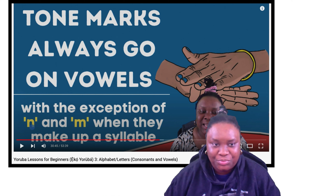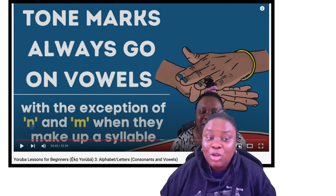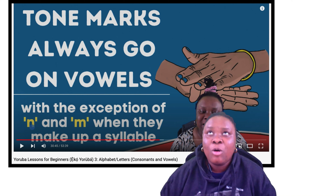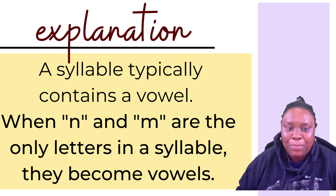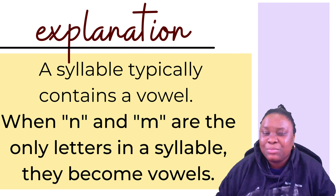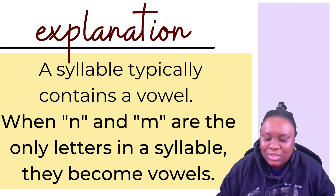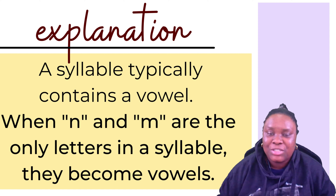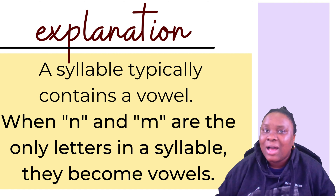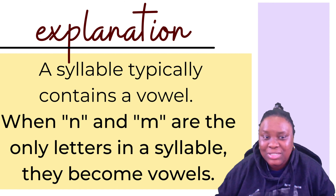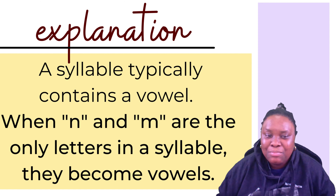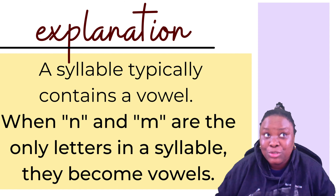Tone marks typically go on vowels, and so tone marks go on ni and mi as well, if that tone applies for that syllable. Since syllables typically contain a vowel — a syllable being the short units of pronunciation — most short units of pronunciation contain a vowel. So when it's just ni or mi alone in a syllable, they become vowels, and because they are vowels, you can put tone marks on ni and mi as well.